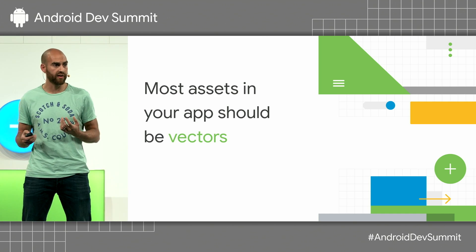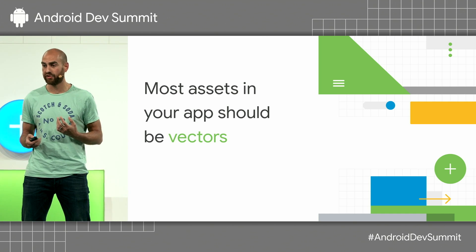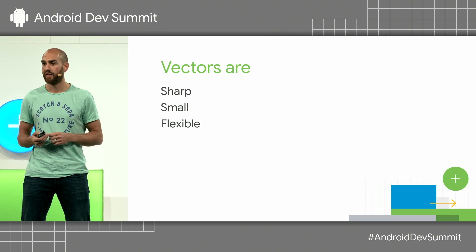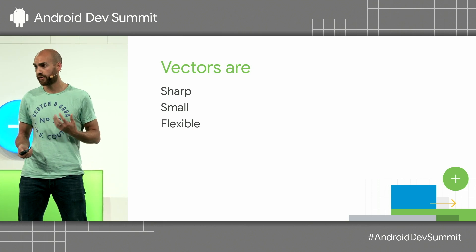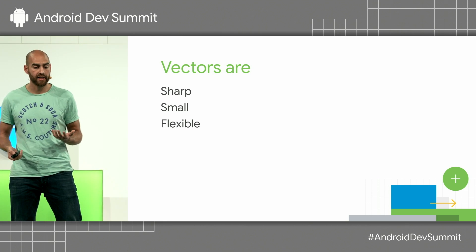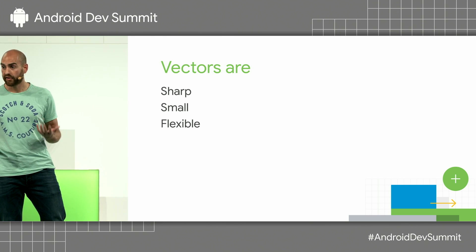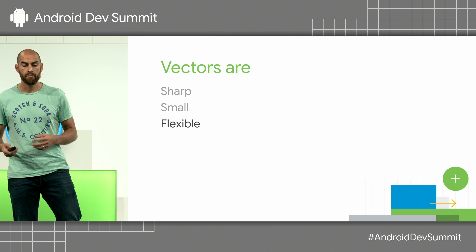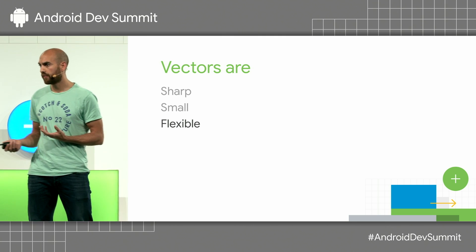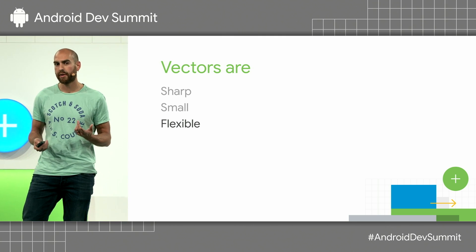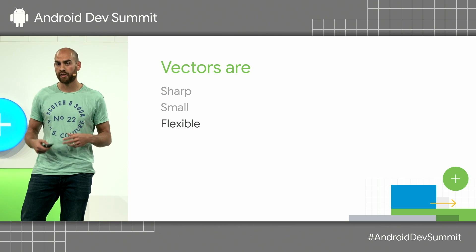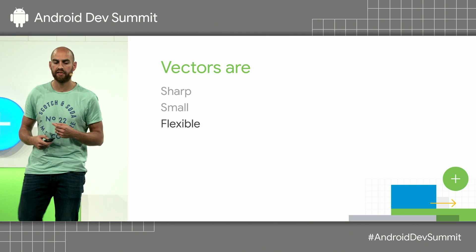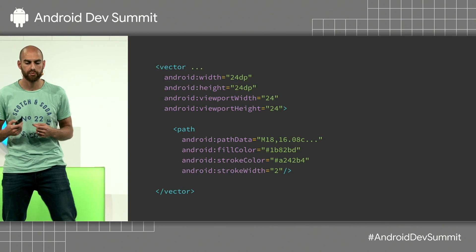Most assets in your applications should be vectors these days. Vectors are awesome. They're sharp on every single density display. They're very small — they compress well so they don't blow your APK. But they're also extremely flexible, and I want to talk about this so you can get the most out of vectors and realize these benefits as widely as possible.